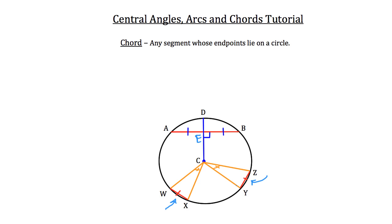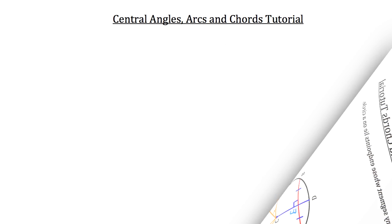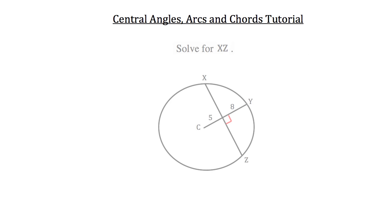So take a moment to digest that, and we're going to jump into a practice problem. I'd like you to solve for segment length XZ. Let's begin with what we know. C is the center of our circle here. And this length from C to where it intersects chord XZ has a length of 5.